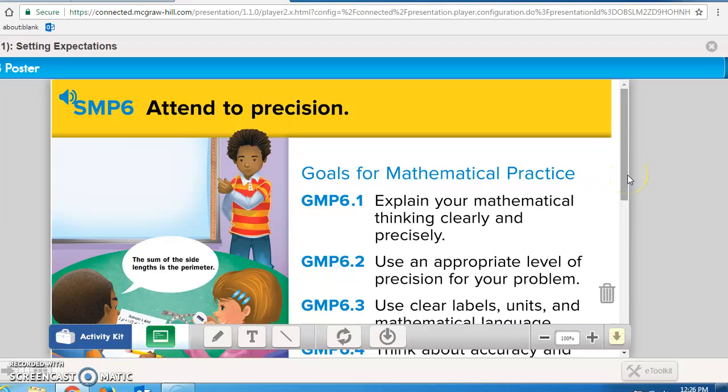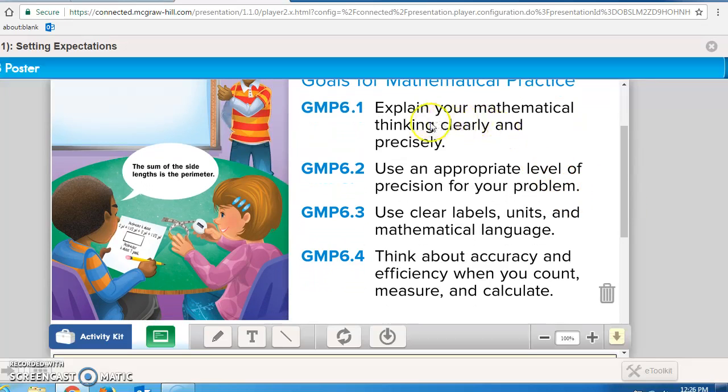Attend to precision. So, what are goals for the mathematical practice? One, you need to be able to explain your mathematical thinking clearly and precisely. Two, you need to use an appropriate level of precision for your problem. Three, you need to use clear labels of units and mathematical language. And four, you need to think about accuracy and efficiency when you count, measure, and calculate. So, look at what the young boy is saying to the girl over here. He's saying the sum of the side lengths is the perimeter, which is exactly right. He's not just saying, oh, I plus. He's saying the sum, so the total, so we know he's adding, of the side lengths, so we know he's counting all sides, is called the perimeter. So, we know plussing is perimeter. This is using precise words.